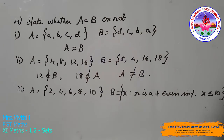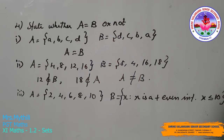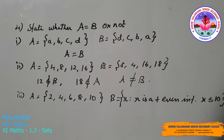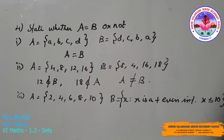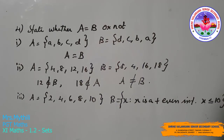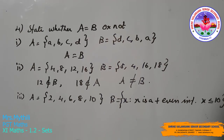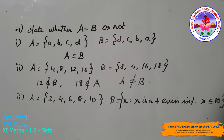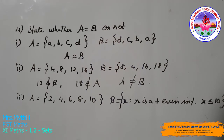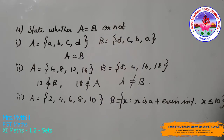Question 4: state whether A = B or not. First: A = {a, b, c, d} and B = {d, c, b, a}. Both sets contain the same elements a, b, c, d, so A = B. Second: A = {4, 8, 12, 16} and B = {8, 4, 16, 18}. The element 12 does not belong to B, and the element 18 does not belong to A, so A ≠ B.